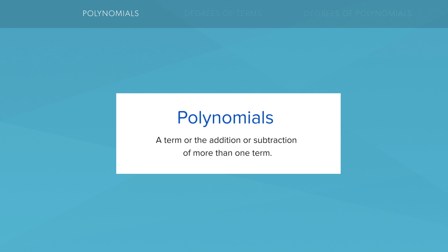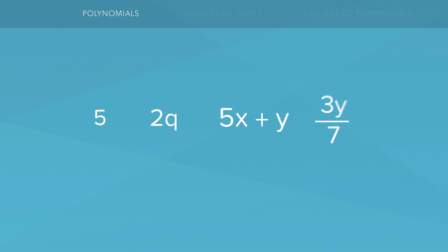A polynomial is either a term or the addition or subtraction of more than one term. So here are some examples of polynomials. A number on its own is also a polynomial. When you have a coefficient multiplying with a variable, that also is a polynomial. And of course we can add or subtract any number of these things and that would also still be a polynomial.